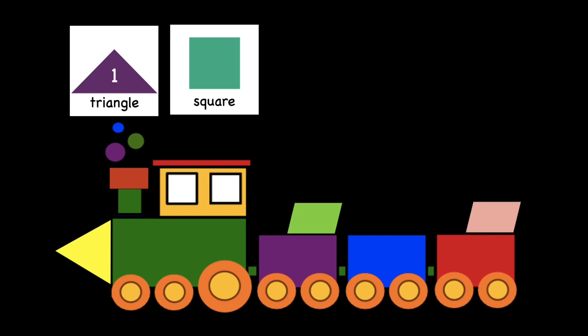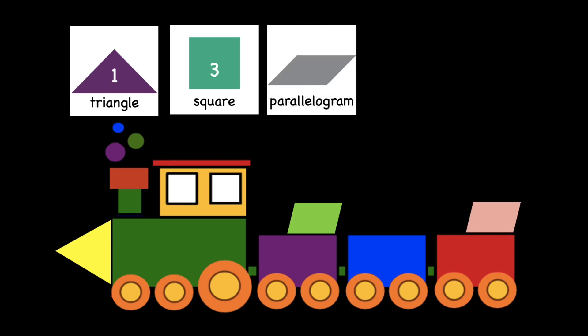How many squares are there? Two? Three? Four? Let's check. Three. Let's see: one, two, and three. Very good. Now let's take a look at another shape. How many parallelograms are there? Two only? Let's see. Correct, we have one and two. One and two. Very good.